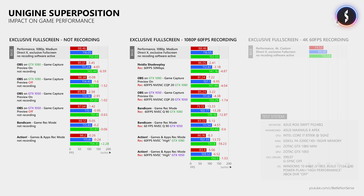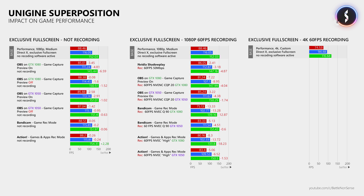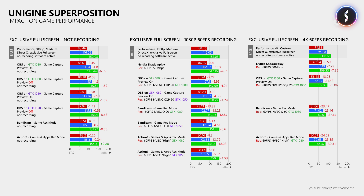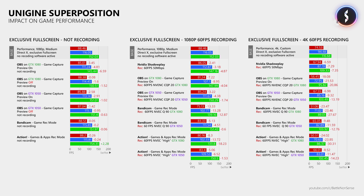Now what if you record gameplay at 4K? In my tests Shadowplay reduced the frame rate by about 7 FPS, while OBS, Action and Bandicam decreased it by more than 21 frames per second when video encoding was done by the primary graphics card. Once I offloaded the video encoding to the GTX 1050, the FPS loss was cut in half, so the minimum frame rate did not drop below 60 anymore. So in terms of performance, not much changed during the last 8 months, but OBS did decrease its performance impact when not recording, and Action added support for offloading the encoding to a second graphics card.